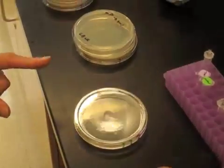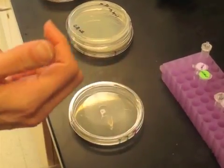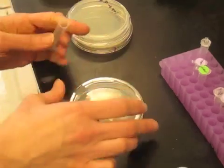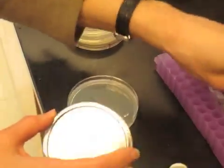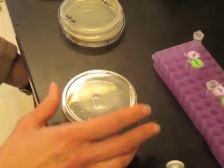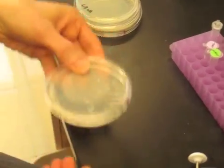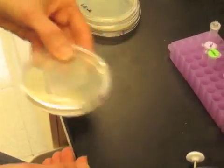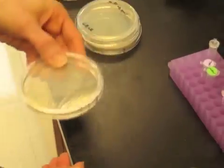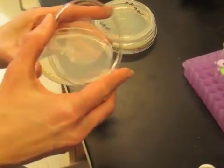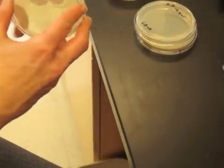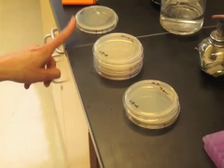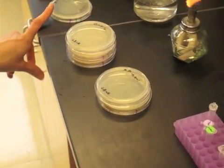One is to take sterile beads like this that you can roll around the surface of the plate like this, and that will spread the liquid over the surface of the plate. And then these can be put into hazardous waste or into a bleach solution to be re-autoclaved or sterilized again.